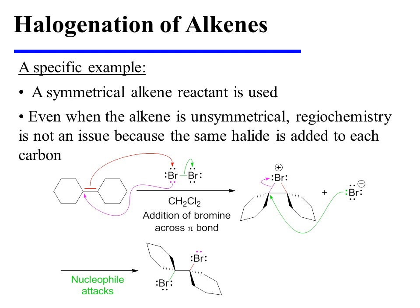The reaction begins with the attack of the pi bond on one of the two bromines, and that results in the displacement of bromide from Br2.